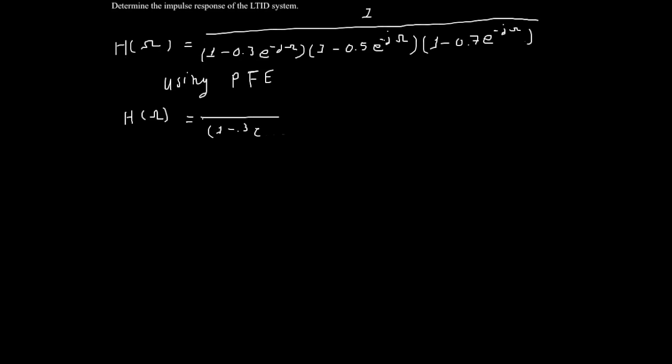To arrive at the impulse response, we must apply the inverse Fourier transform to the transfer function. Its current form, however, will not allow a convenient application of our transform table, so we will rearrange H of omega into the sum of three fractions using partial fraction expansion,